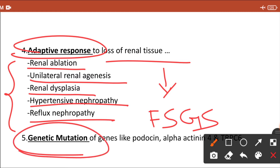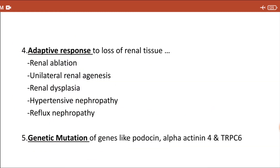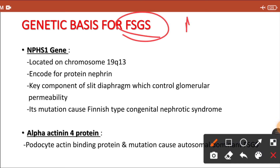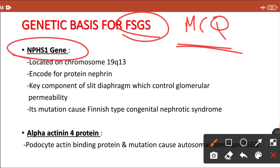The fifth category is genetic mutation of certain genes such as podocin, actinin-4, and TRPC6. The genes responsible for FSGS development are frequently asked in exams as MCQs. The first gene associated with FSGS development is the NPHS1 gene, located on chromosome number 19, long arm region 1, band 3.